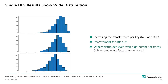If an attacker uses more than a single trace, this improves the situation for the attacker. The first figure shows the single-trace case; the second shows three traces; the third shows 900 traces. We see the distribution moves to the left, meaning security levels get lower and the mean security level decreases. Importantly, this also means the wide distribution is not due to noise factors that can be averaged out — using 900 traces already averages out such noise factors, yet the wide distribution remains.